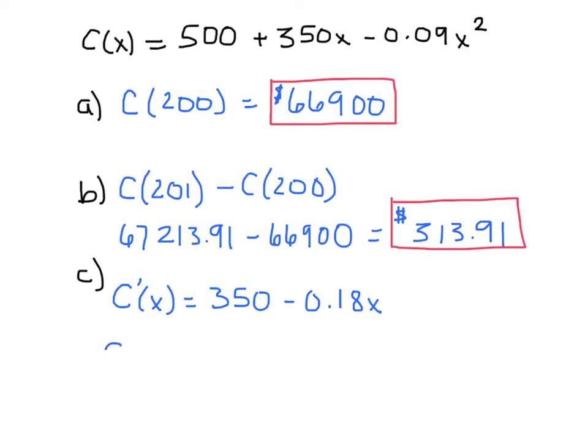When we plug 200 in for x, this works out to be 314. Now, the units on this are dollars per widget. So what we've just calculated is that the rate of change at a production level of 200 is $314 per widget.